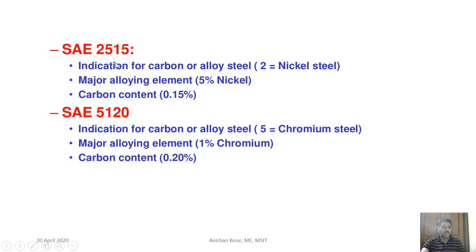SAE 2515: first digit '2' indicates nickel steel, second digit '5' indicates major alloying element (nickel content), last two digits '15' indicate 0.15% carbon. SAE 5120: '5' indicates chromium steel, '1' indicates 1% chromium, and carbon content is 0.2%. This concludes our discussion on the designation systems of steel and cast iron according to both Indian Standards and AISI/SAE systems.